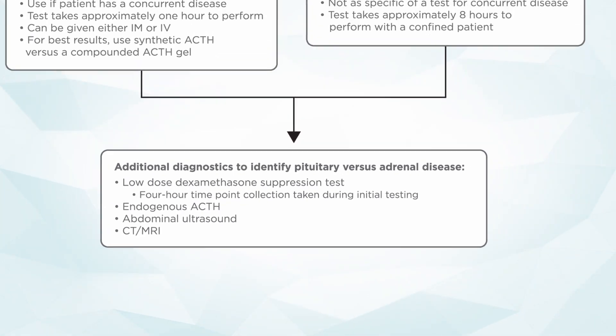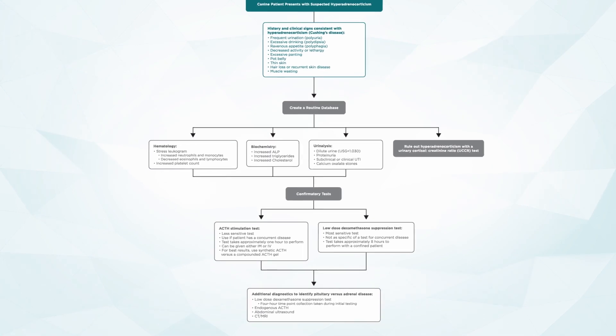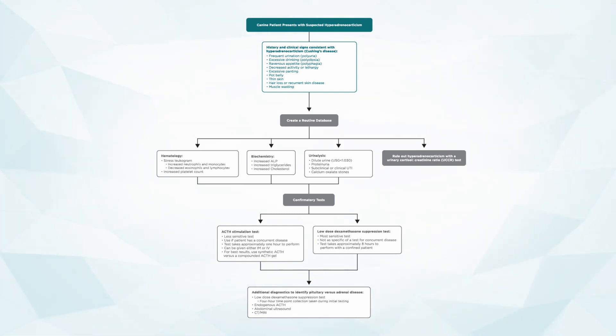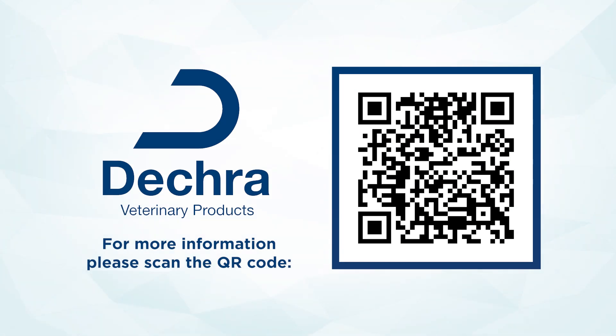So with that, we've gone through the historical and clinical findings that help you zero in on Cushing's disease, routine database findings, and how to confirm that disease in your canine patients. I hope you found this algorithm helpful to guide your diagnosis of your next Cushingoid patient. Thank you to DECRA for sponsoring this episode of Step by Step. For more information on hyperadrenocorticism, check out vetfolio.com or use the onscreen QR code for additional tips about Cushing's disease from DECRA.